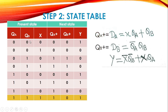Filling in the state table: when QA=0, QB=0, X=0 — since X=0 the DA term gives 0, and QB=0 so QB+=0; for output Y = X̄·Q̄B = 1·1 = 1. We continue solving all combinations using these equations to complete the state table.